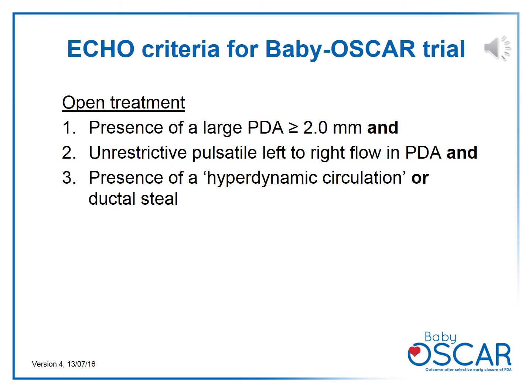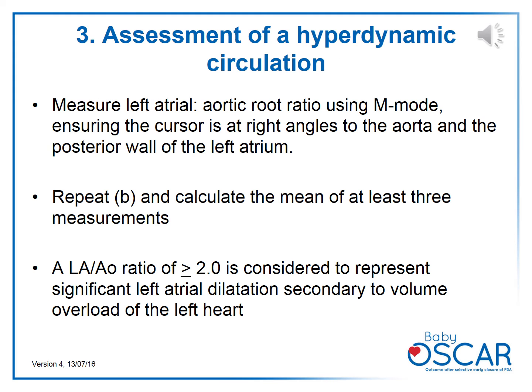The echocardiographic criteria for open treatment include a minimum duct dimension of 2 millimeters or more, an unrestrictive pulsatile left-to-right flow in the PDA, and presence of hyperdynamic circulation or ductal steal. To assess hyperdynamic circulation, measure the left atrial to aortic root ratio using M-mode, ensuring the cursor is at right angles to the aorta and posterior wall of the left atrium. Take a mean of at least three measurements. An LA:Ao ratio of two or more is considered significant, indicating left atrial dilatation secondary to volume overloading of the left heart.